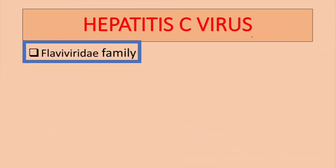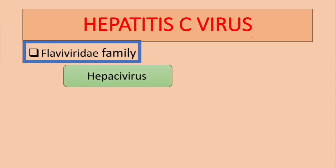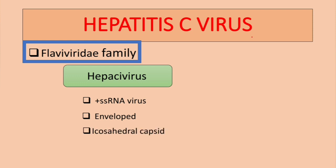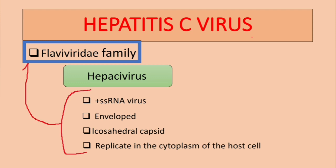Hepatitis C virus belongs to the Flaviviridae family, particularly in the hepatitis virus genus. It is a positive-sense single-stranded RNA virus. It has an envelope and an icosahedral capsid or symmetry. Like most RNA viruses, it replicates inside the cytoplasm of the host cell, in this case in the hepatocytes. All these features are common for the Flaviviridae family.